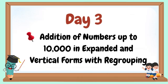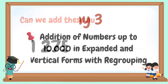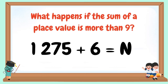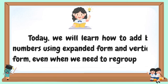Welcome to our Day 3: Addition of numbers up to 10,000 in expanded and vertical forms with regrouping. Can we add these numbers easily? What happens if the sum of a column is more than 9? Today we will learn how to add big numbers using expanded form and vertical form even when we need to regroup.